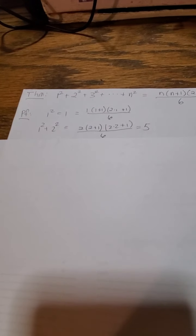1 squared plus 2 squared, well, that's 5, of course, and that's going to be equal to 2 times 2 plus 1 times 2 times 2 plus 1 over 6, because that's 2 times 3, which cancels the 6 right away, and that's 4 plus 1 is 5, equals 5. And let's do one more.